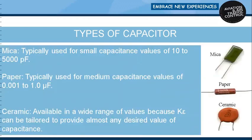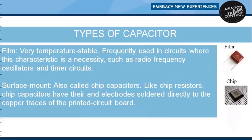Paper and mica capacitors are typically used for small capacitance values of 10 to 5,000 pF. Paper capacitors are typically used for medium capacitance values of 0.001 to 1 µF. Ceramic capacitors are available in a wide range of values because the dielectric constant can be tailored to provide almost any desired capacitance. Ceramic is often used for temperature compensation — to increase or decrease capacitance with a rise in temperature. Film capacitors are very temperature stable and frequently used in circuits where this characteristic is a necessity, such as radio frequency oscillator and timer circuits.